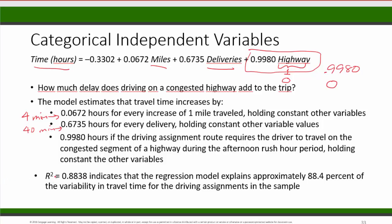In this regression result, the r squared, or the coefficient of determination, was 0.8838. So that means the regression model with these three variables together explains approximately 88.4% of the variation in the travel time in our sample.